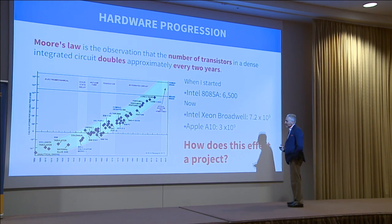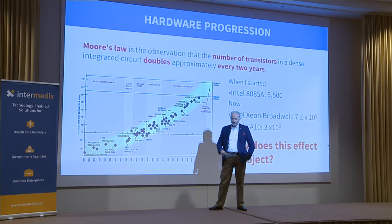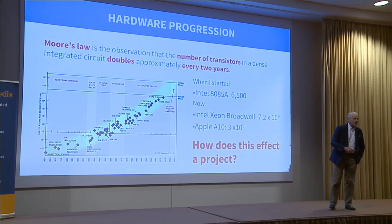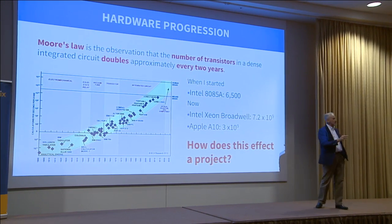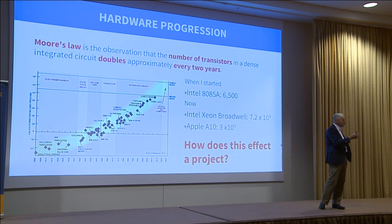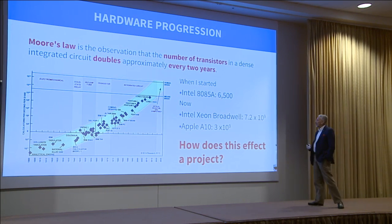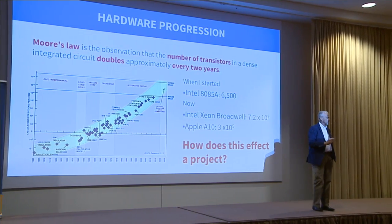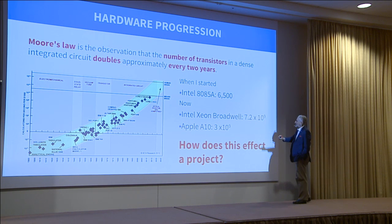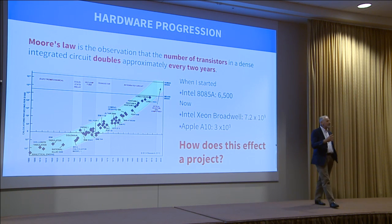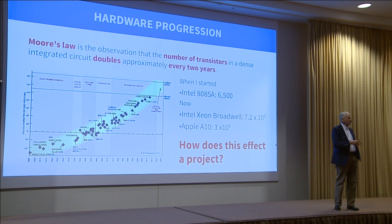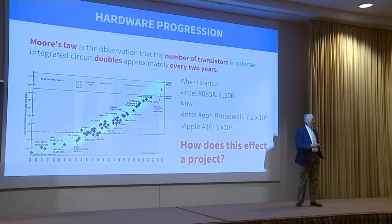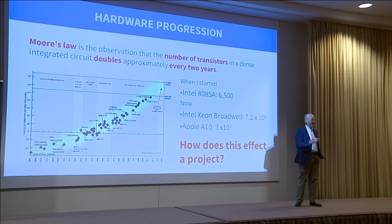Hardware progress. The first computer I programmed on was the DEC-10. When I was a teenager in the 70s, my father taught me how to build digital electronic circuits with discrete components — no ICs. The first microprocessor I used was an Intel 8085 — it had 6,500 transistors. Today, the Broadwell chips from Intel have 7 billion transistors. Every two years, the number of transistors in a given physical size doubles, according to Moore's law. How will that affect the complexity of your project?